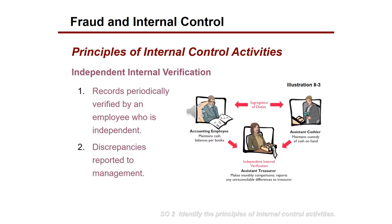Another internal control activity is having an independent internal verification method. This person checks the assistant cashier's work and the accounting department's work. Records are periodically verified by an independent employee who goes through documents and records to find any discrepancies or issues, and reports those directly to management if any missing amounts or improperly reported numbers are found.